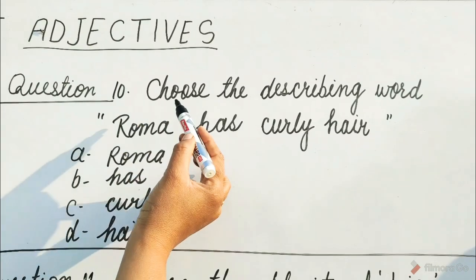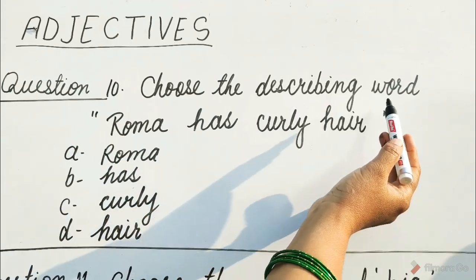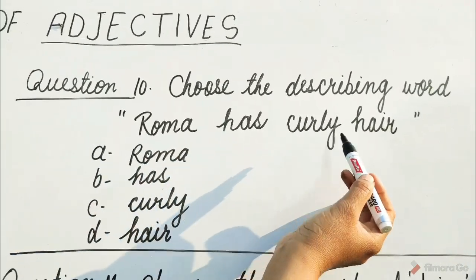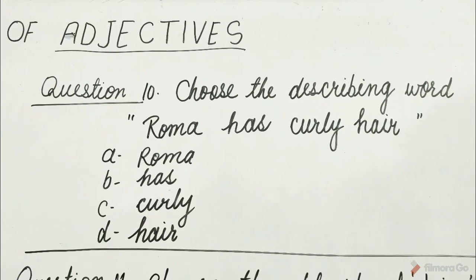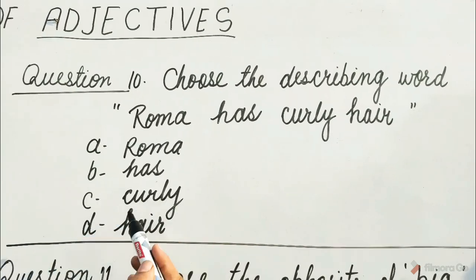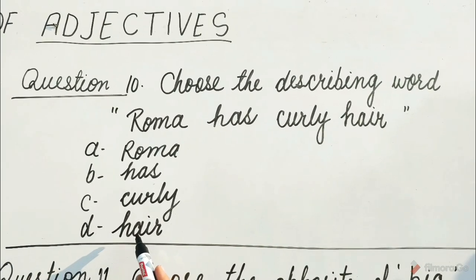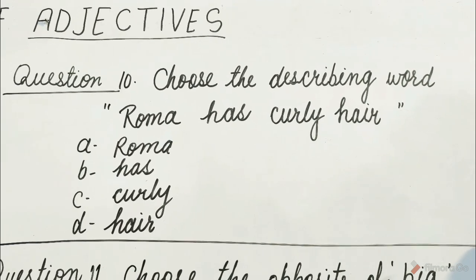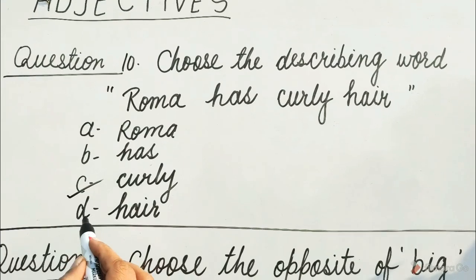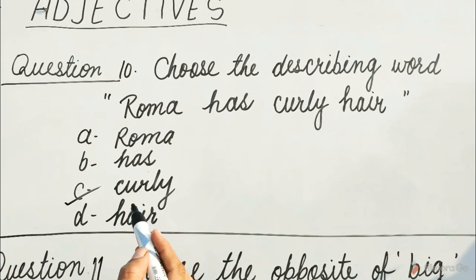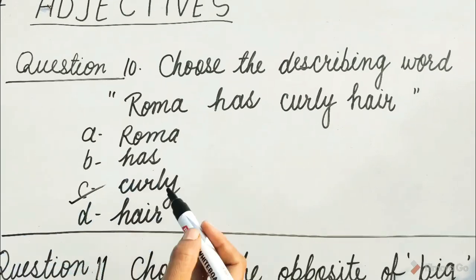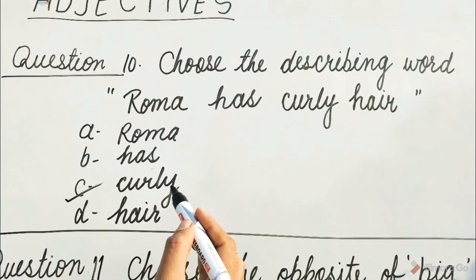Question 10: Choose the describing word. Sentence: Roma has curly hair. Options are A. Roma, B. Has, C. Curly, D. Hair. Guess children, which option will be correct? Yes, it is C option — Curly. Because curly represents a noun of what kind.